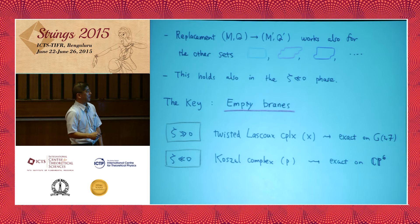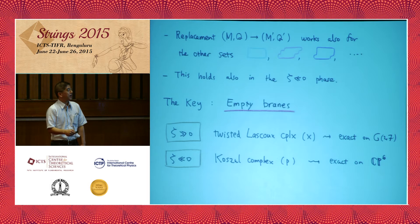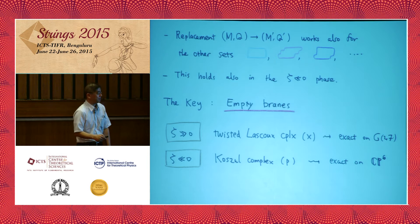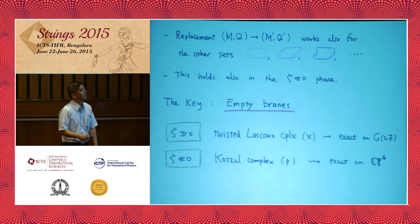The key for this replacement is the so-called empty branes: branes whose brane potential Q Q^dagger anticommutator is always positive on the vacuum locus, so they are empty by complete tachyon condensation. For the Grassmannian phase there is an explicit construction of empty branes using the twisted Koszul complex, and for the Pfaffian phase there is another construction called the Koszul complex.